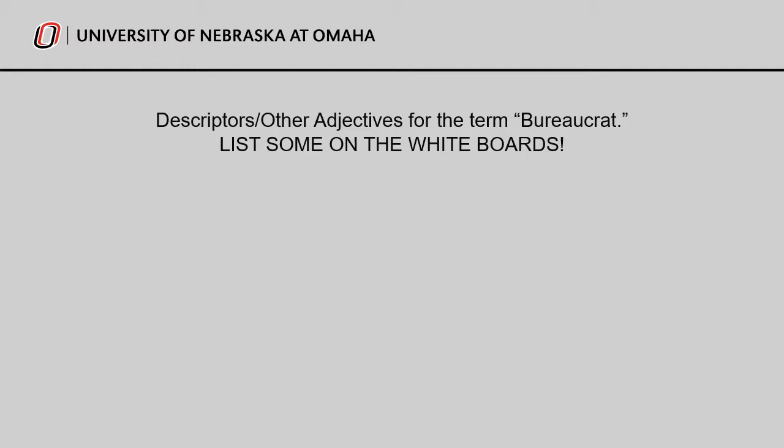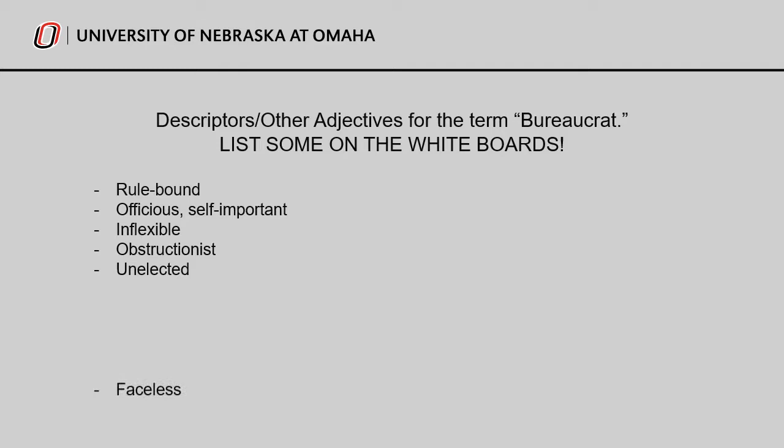We talk about those descriptors, and these are some typical answers we see. Bureaucrats are described as rule-bound, as officious or self-important, as inflexible, as obstructionists, as unelected, as faceless, as nameless — and a term that has gained some popularity lately — they're described as deep state actors. To call someone a bureaucrat, of course, is not a compliment. But as it turns out, in 8050, this whole term is kind of what we've been talking about: what is a bureaucrat, and what is the role of a bureaucrat in our democracy?